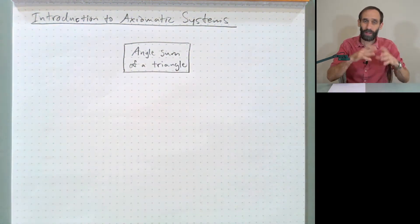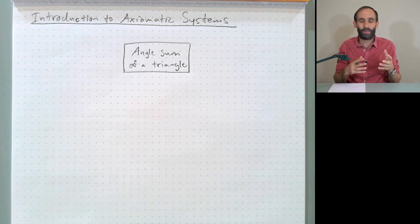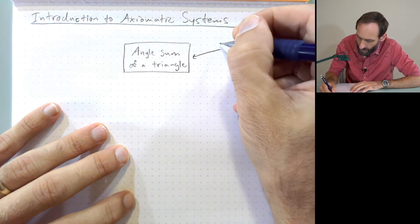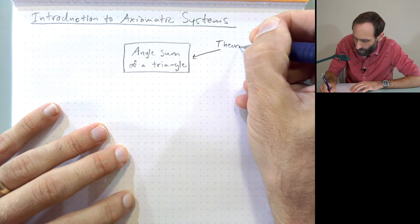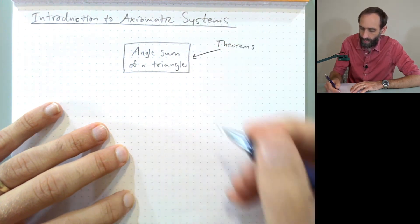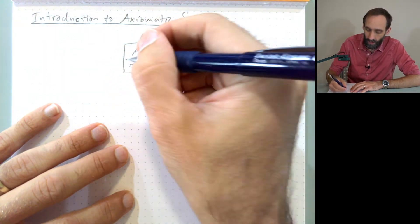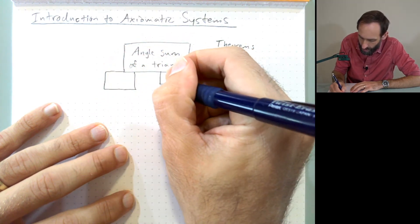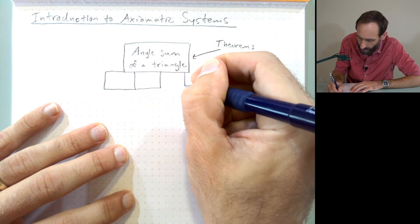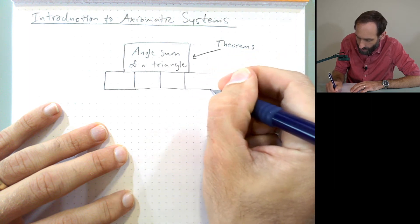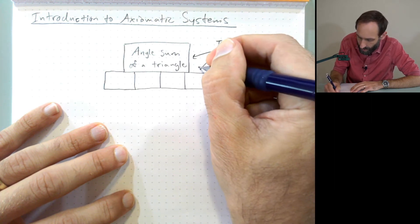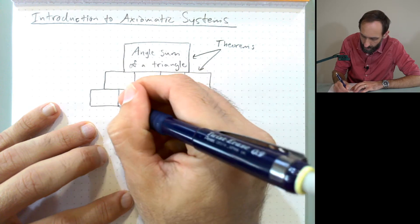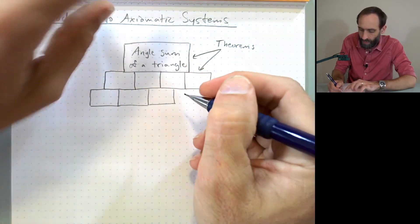Now any brick in the brick structure is something we call a theorem. So these are theorems. And it turns out the angle sum of a triangle rests on other bricks. It doesn't just sit up there all by itself. It relies on these other bricks, these other theorems. And these theorems are built on more theorems. And then there are other theorems built even above this.